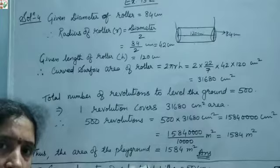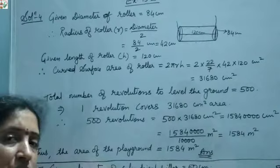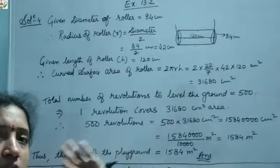So we need to find the curved surface area of the cylinder for one revolution. Then for 500 revolutions, we multiply to get the total area. So one revolution gives us a certain area, and 500 revolutions gives us the area of the playground.